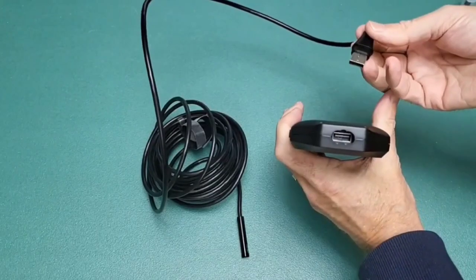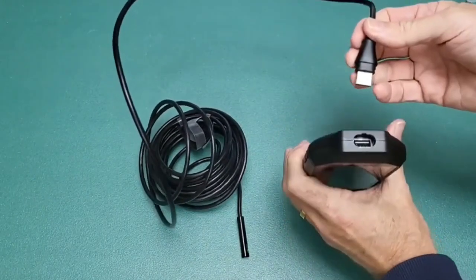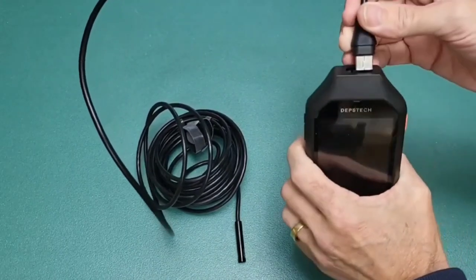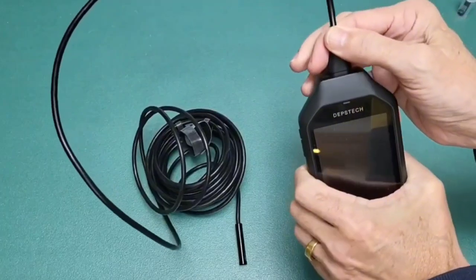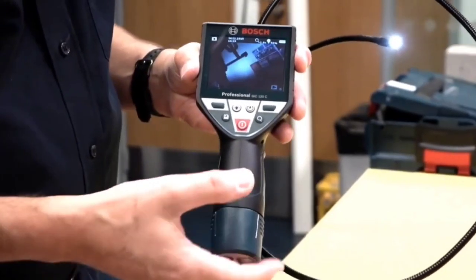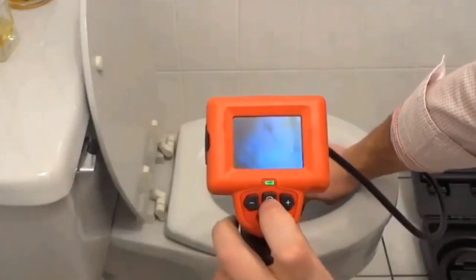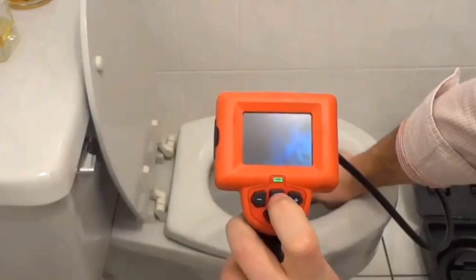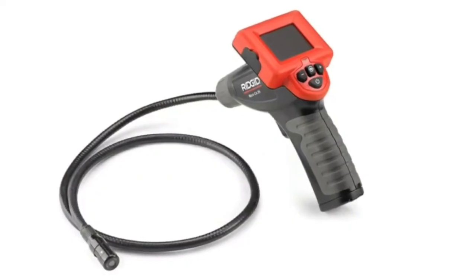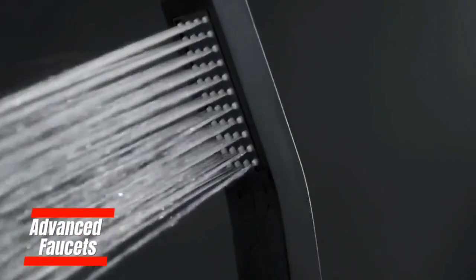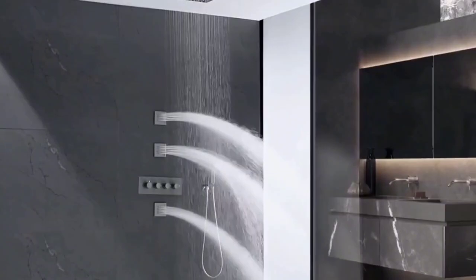The real-time imagery provided by these cameras aids in accurate diagnosis, allowing for targeted and precise repairs. This technology is particularly valuable in residential, commercial, and industrial settings, as it minimizes the time and cost associated with traditional inspection methods. Additionally, it enhances overall maintenance practices and helps prevent potential water damage or system failures by allowing proactive measures to be taken based on early visual assessments.